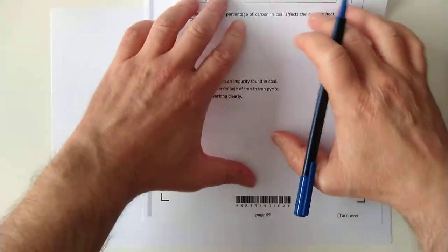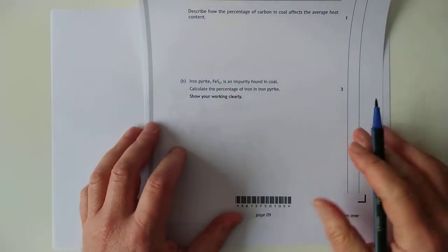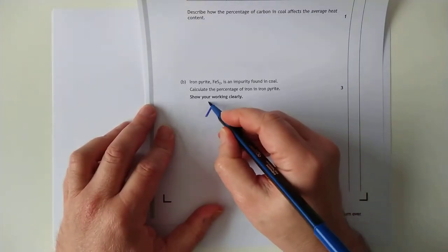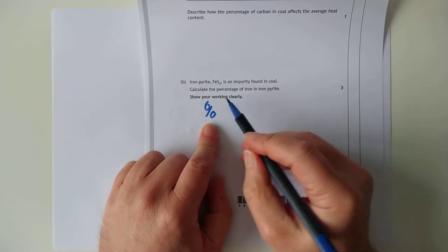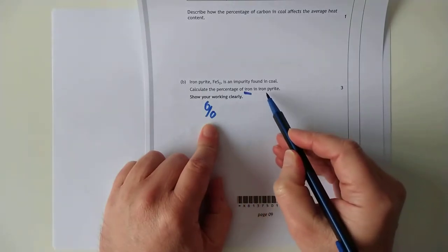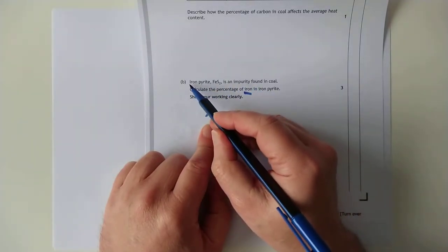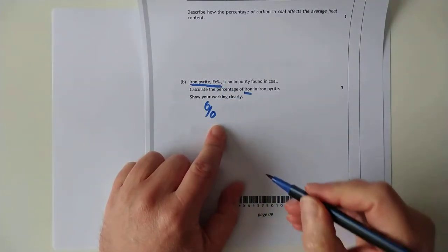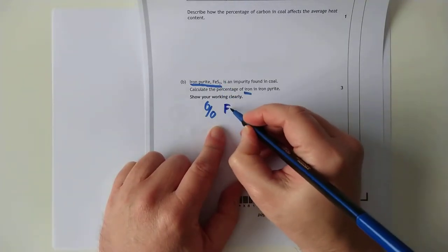Here's one here. This one is a 3 marker, which looks quite scary, but it's really not. It's actually a doddle. So we want to know the percentage of iron in iron pyrite, FeS2. It's an impurity that you find in coal. So we want the percentage of iron.